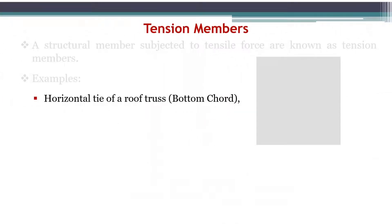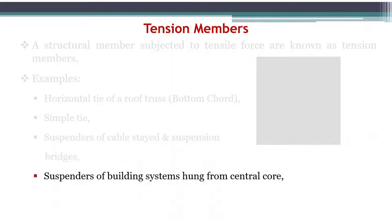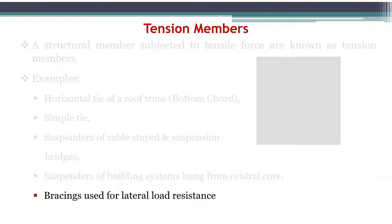We have a few examples of tension members in civil engineering structures: horizontal tie of a roof truss, bottom chord, simple tie, suspenders of cable-stayed and suspension bridges, suspenders of building systems hung from the central core, and bracings used for lateral load resistance.